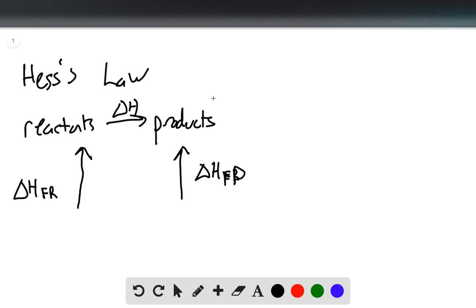So what this looks like in an equation is that the delta H of reaction is equal to the delta H formation of the products minus the delta H formation of the reactants.